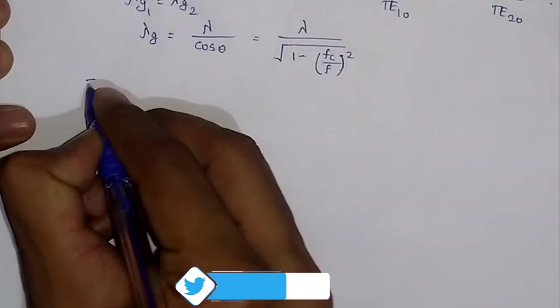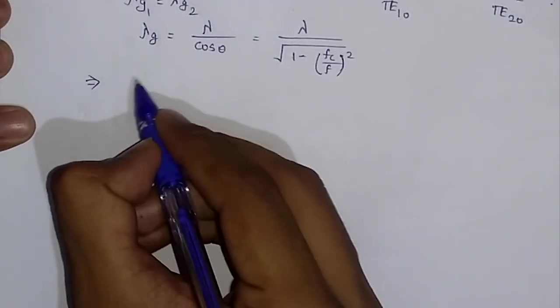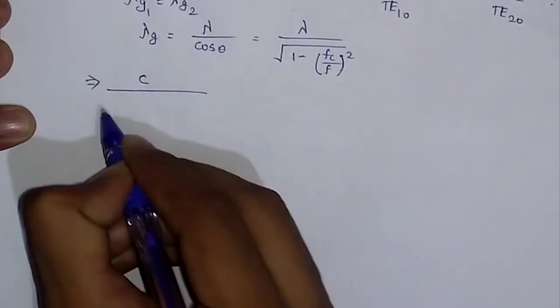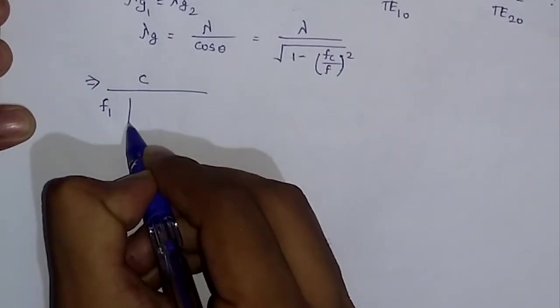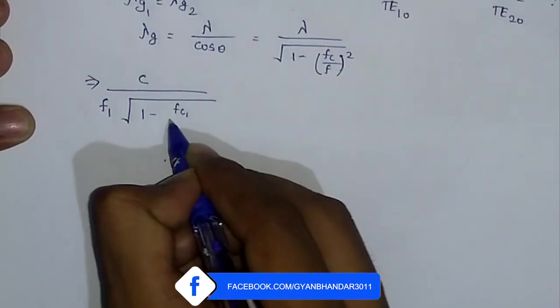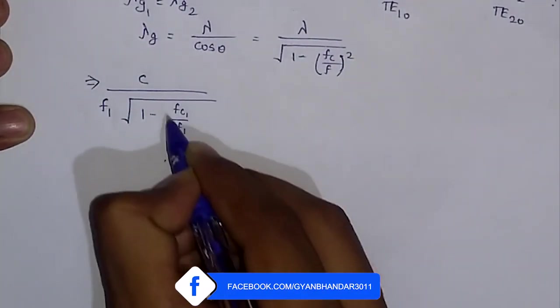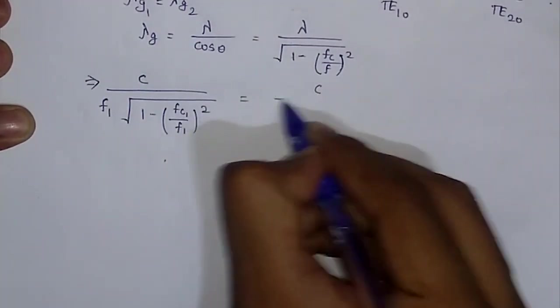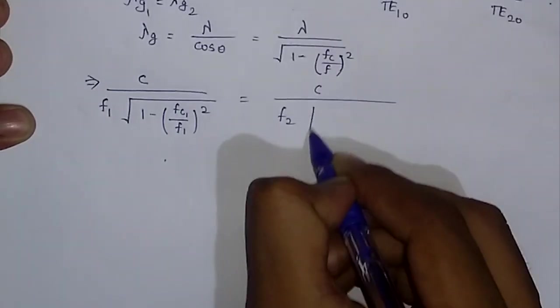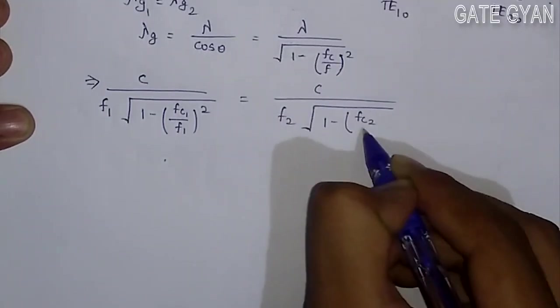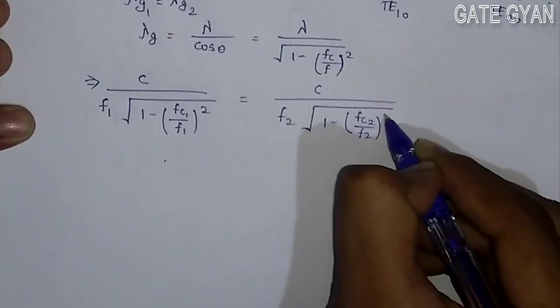So put the values for both of these. Lambda G1, which will be lambda given as C by F, so I will write it as C divided by F1 multiplied with square root of 1 minus FC1 divided by F1 whole square, is equal to C divided by F2 into square root of 1 minus FC2 divided by F2 whole square.